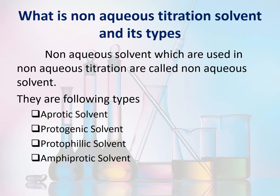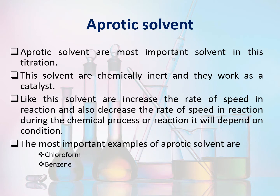Types of non-aqueous solvents: The non-aqueous solvents used in non-aqueous titration are of the following types: aprotic solvent, protogenic solvent, protofilic solvent, and amphiprotic solvent. Aprotic solvents are the most important solvents in titration. These solvents are chemically inert and they work as a catalyst. They can increase or decrease the rate of reaction depending on the condition. The most important examples of aprotic solvents are chloroform and benzene.